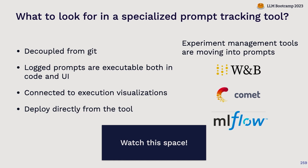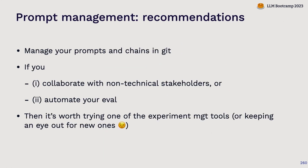The tool should have a playground component so non-technical users can interact with things in the UI. These are some of the helpful properties to have in a system like this, so it's worth paying attention to this space. If you need some of these things now, try out some of the tools. If not, keep an eye out to see if one emerges as a standard. My recommendation: manage your prompts and chains in Git, and check out other tools if collaboration or automated evaluation become a big pain point.